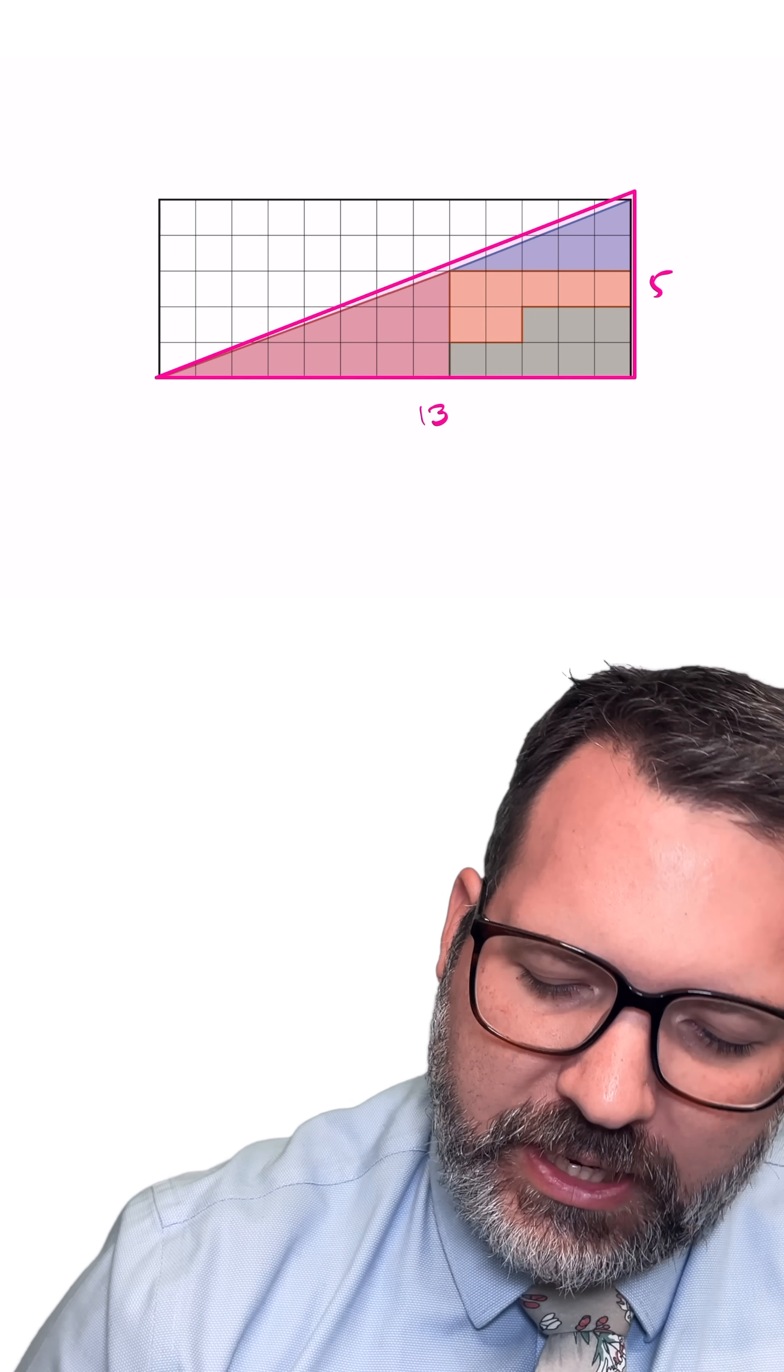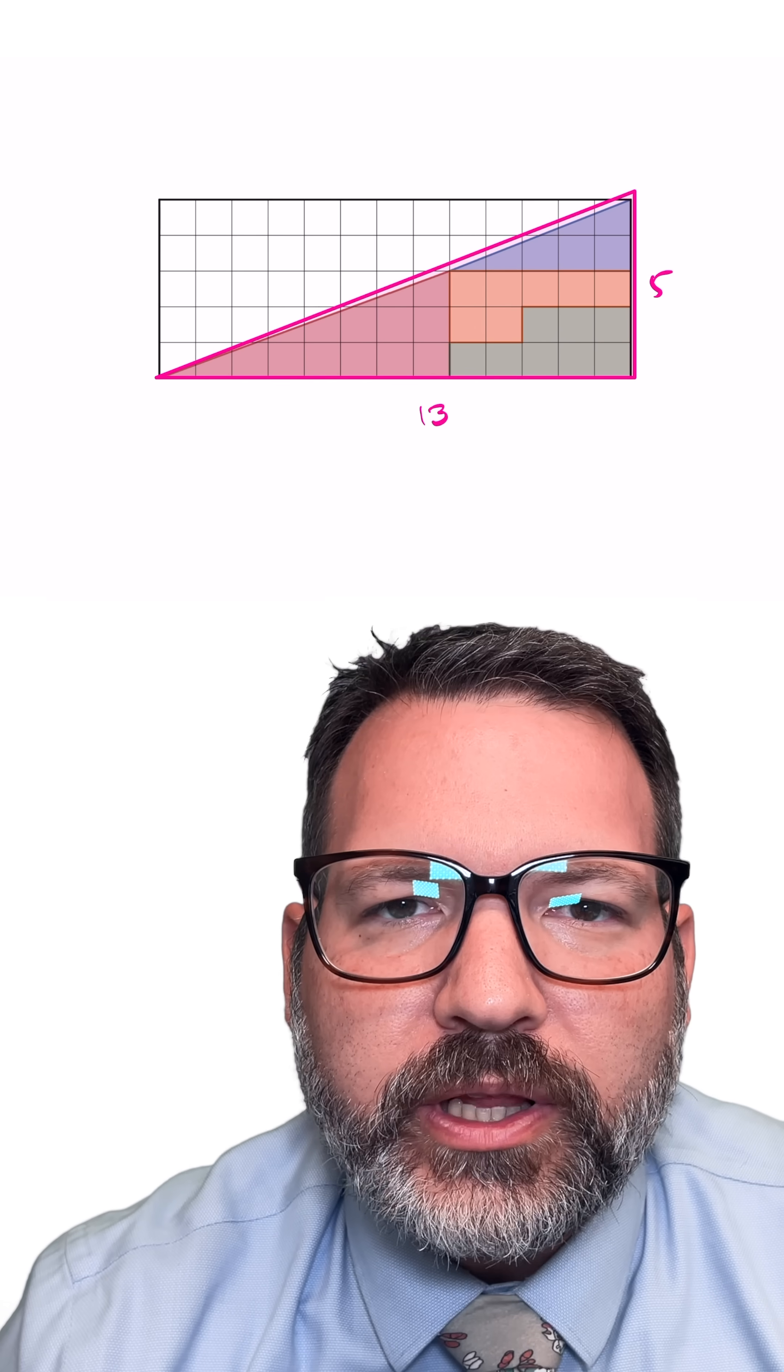Whenever you're dealing with a puzzle like this, you want to ask yourself, what are my assumptions and how might those assumptions be failing? In this particular case, I'm assuming that this is a 5 by 13 triangle, that it is genuinely a triangle.